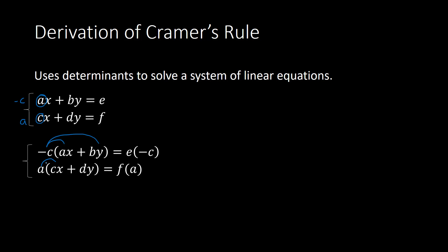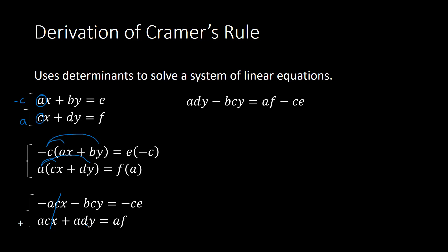I can also distribute the A through both terms in the parentheses. So I have negative C times A, or negative ACX, and then negative C times B times Y gives me negative BCY, and on the right side of the equation we have negative C times E. The second equation gives us ACX, then ADY, equal to AF. Now when I add these together, the first two X terms cancel — that was my goal. So now I have ADY minus BCY equals AF minus CE.